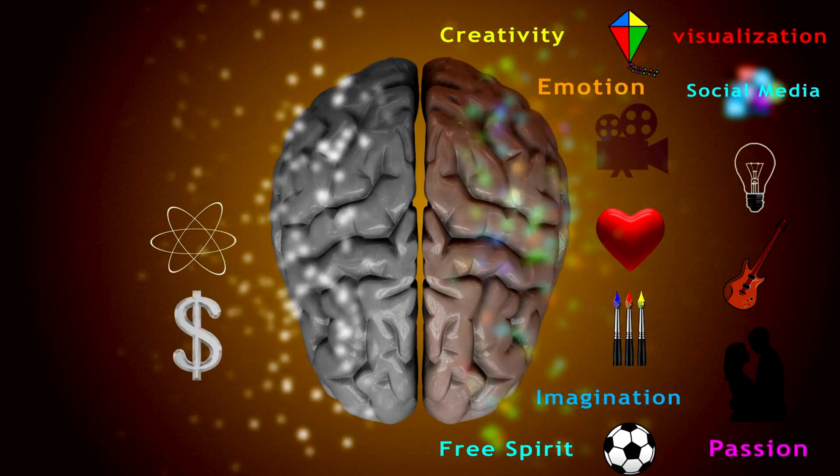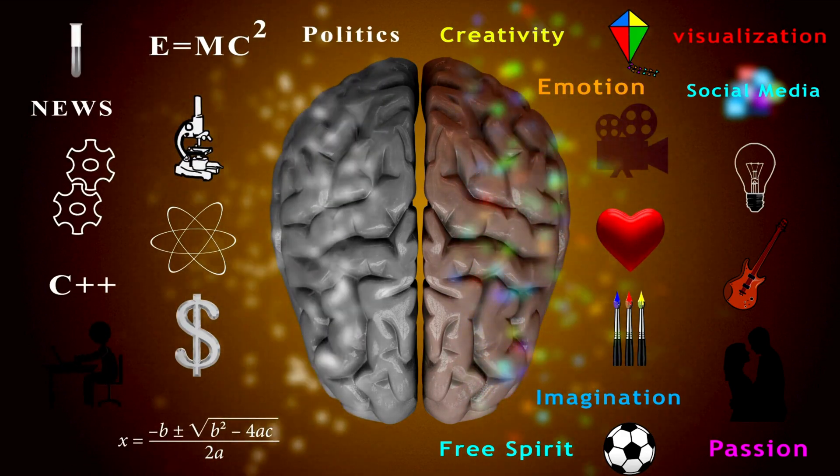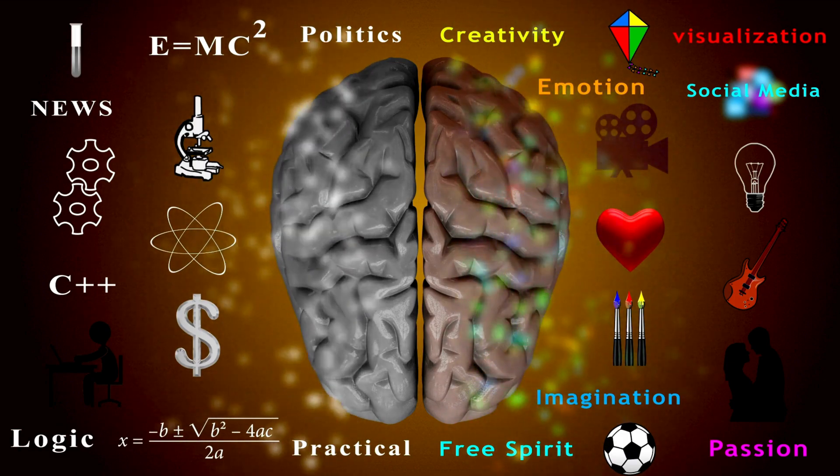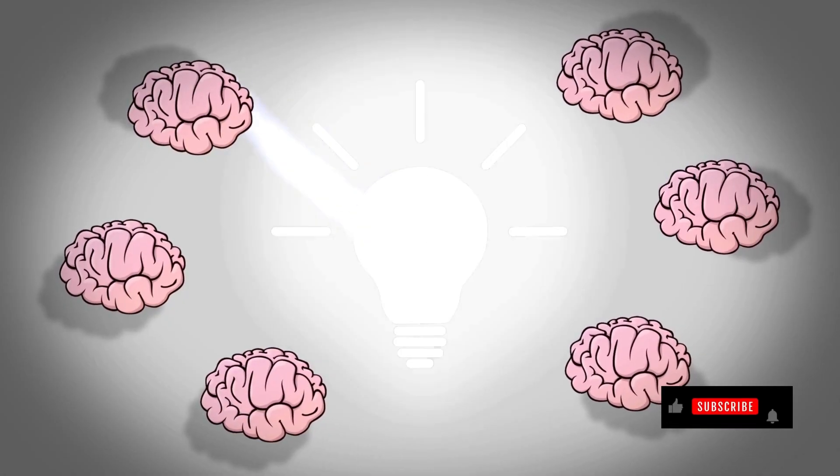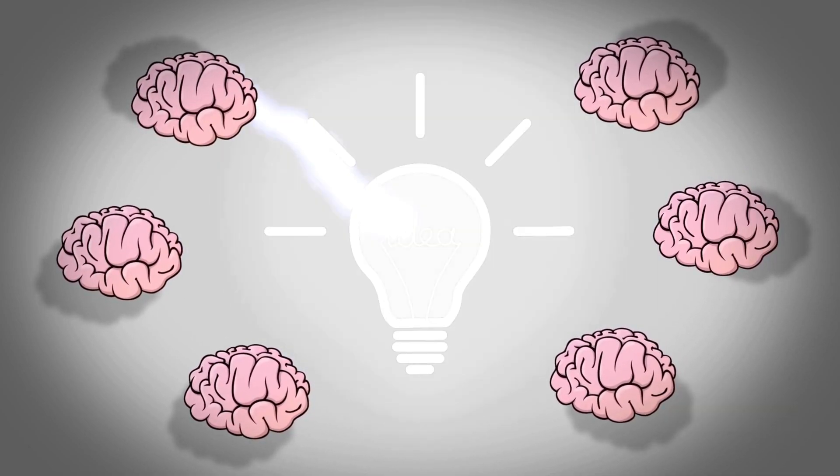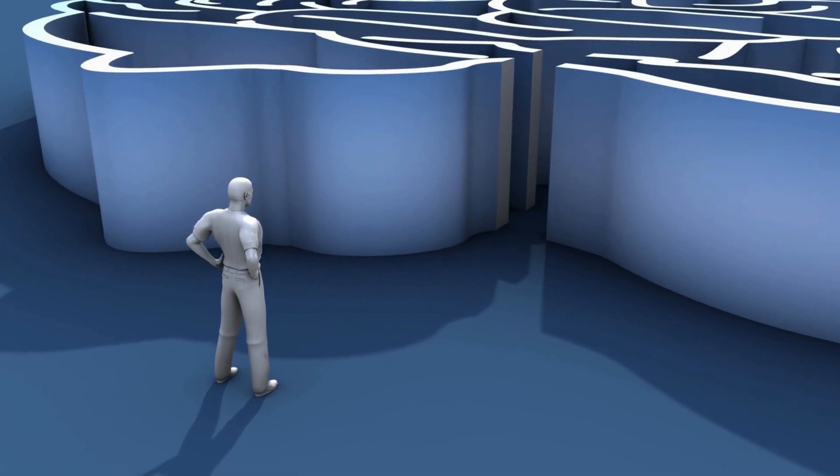The amygdala, responsible for emotional responses, often guides our initial reactions, while the hippocampus stores these emotional memories. Over time, repeated exposure to certain stimuli solidifies these attitudes, creating neural pathways that reinforce our predispositions.